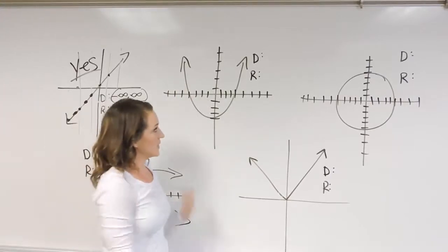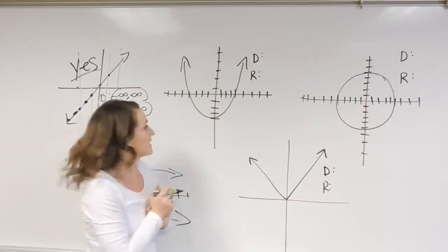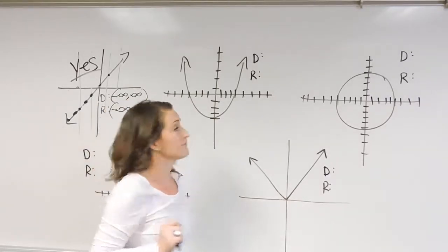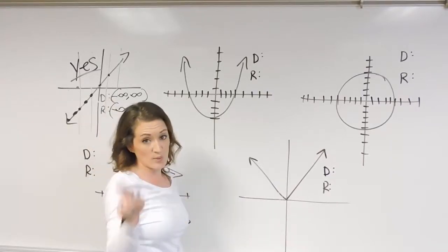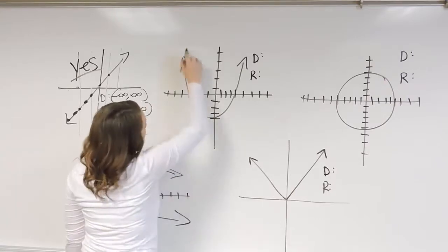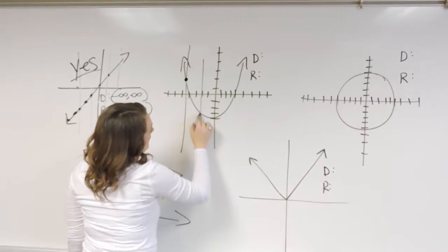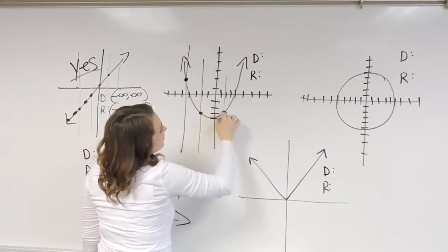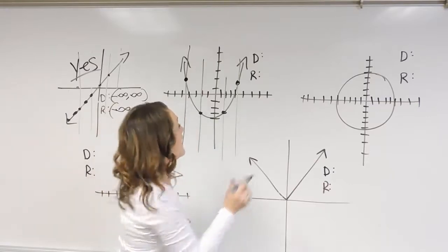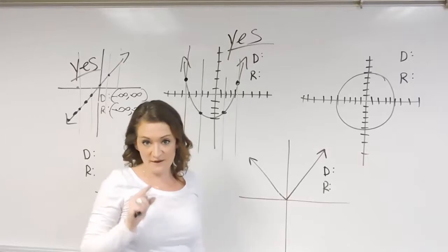Taking a look at our next example. First off, is it a function? If I can draw a vertical line anywhere on the graph and it only crosses one point, then it's a function. Drawing a line there — hits one point. Drawing a line there — once. Pretty much anywhere I go on this graph, it's only going to cross one time. So for this one, yes, it is a function.